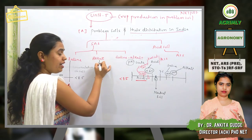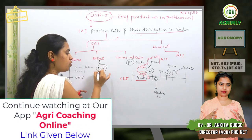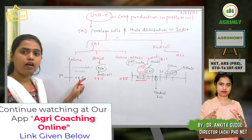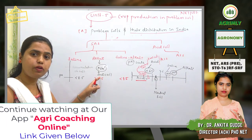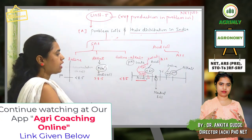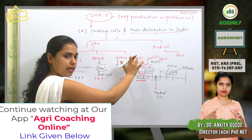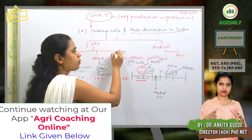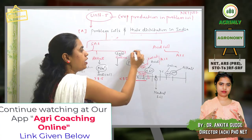Alkali soil is characterized by a high accumulation of sodium ions, which is why it is also known as sodic soil. Saline-alkali soil combines both properties — it has a high accumulation of salt and also a high accumulation of sodium ions.